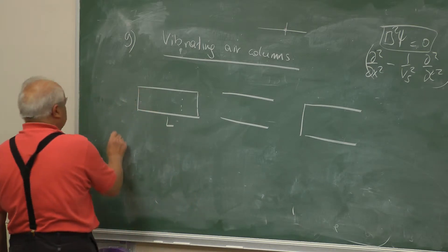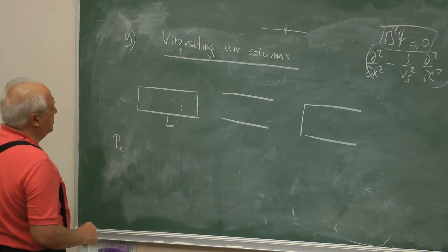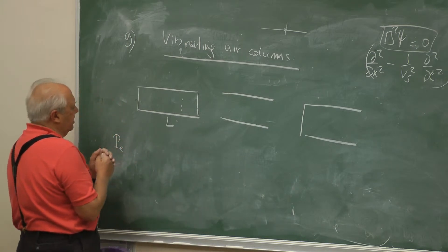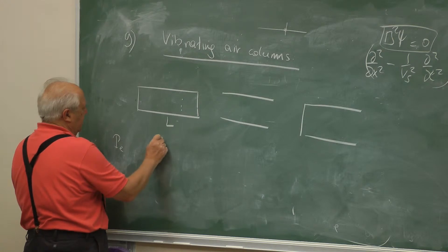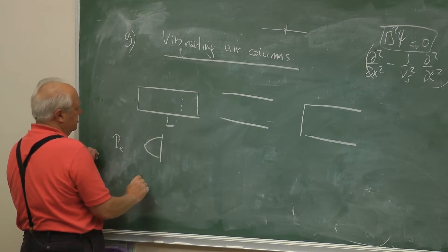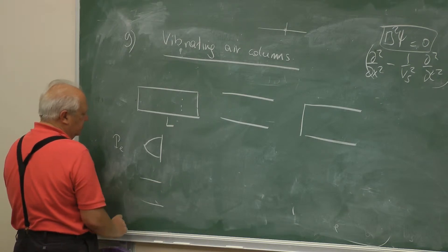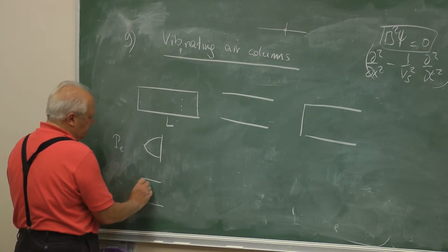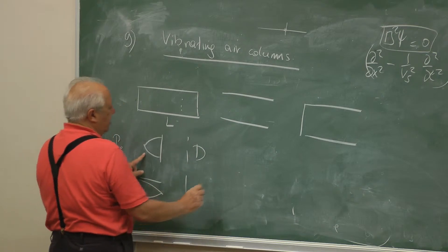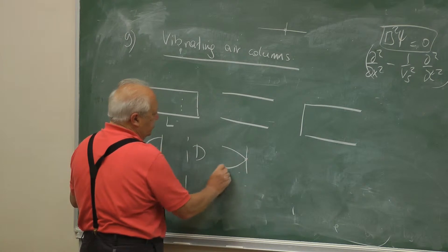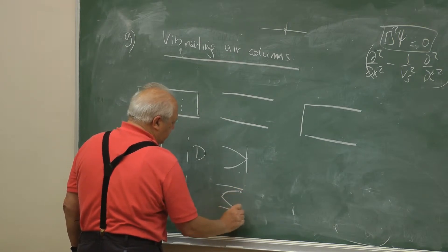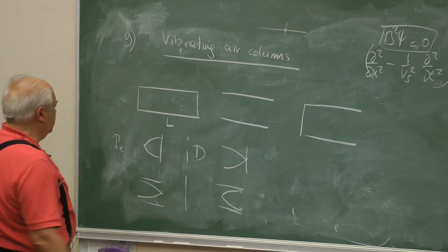If you think of the excess pressure, what is the boundary condition at a closed end and an open end? At a closed end, a molecule is coming, hitting, and getting reflected. Therefore, it will have an anti-node at the wall. At the open end, the excess pressure will be zero. For the displacement, at the wall it will be zero because you cannot push the wall, and when it's open, you have the anti-node. Depending on your choice, you can use either one.